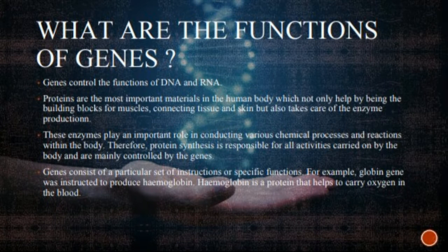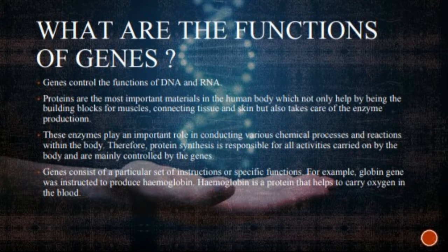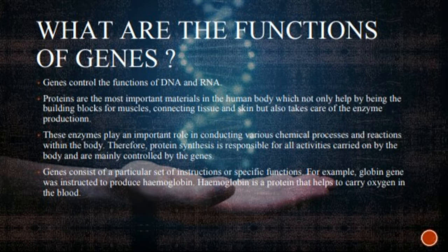Genes consist of a particular set of instructions for specific functions. For example, the globin gene is instructed to produce hemoglobin. Hemoglobin is a protein that helps carry oxygen in the blood. These hemoglobin molecules are found in red blood cells (RBC).